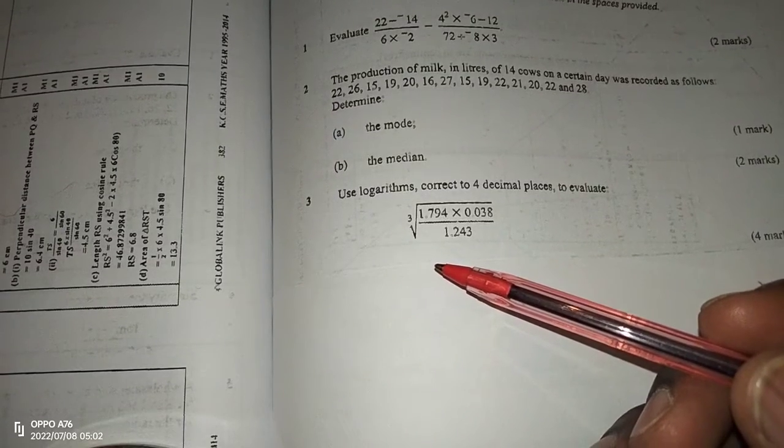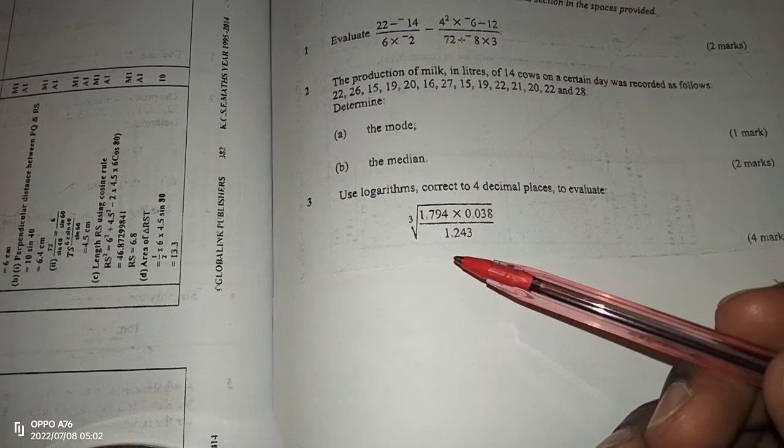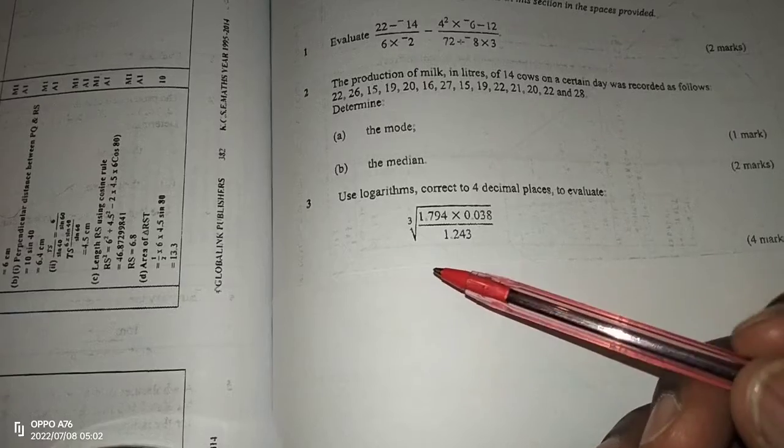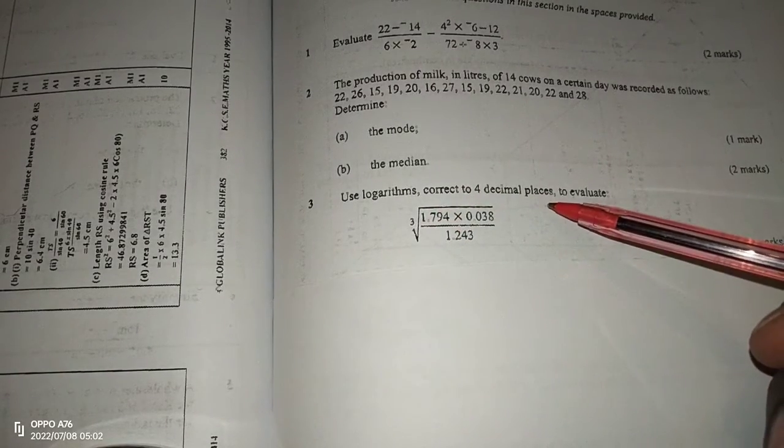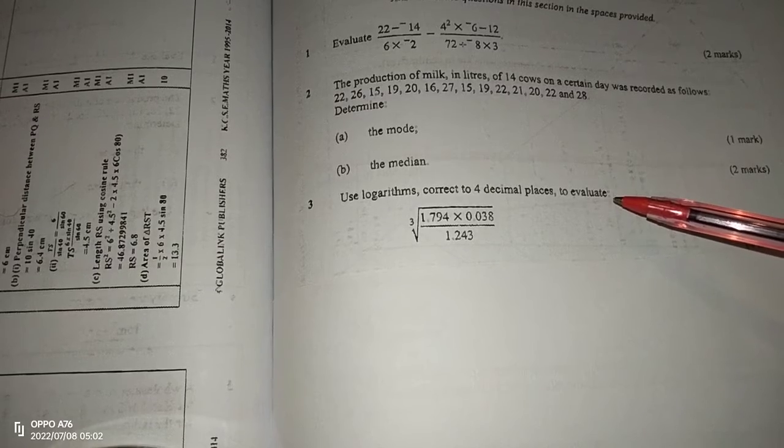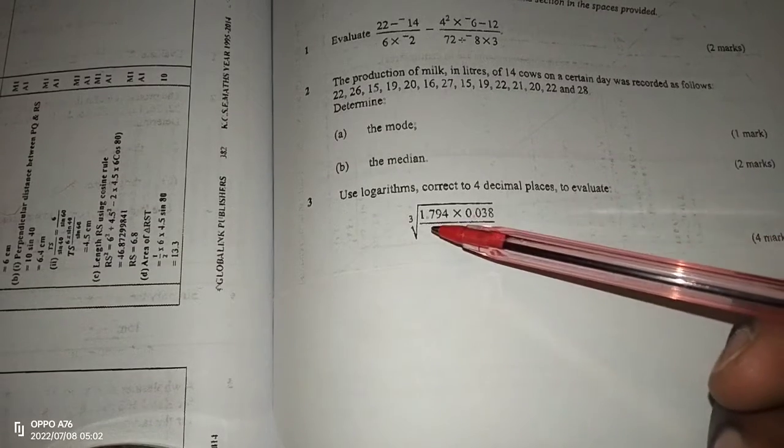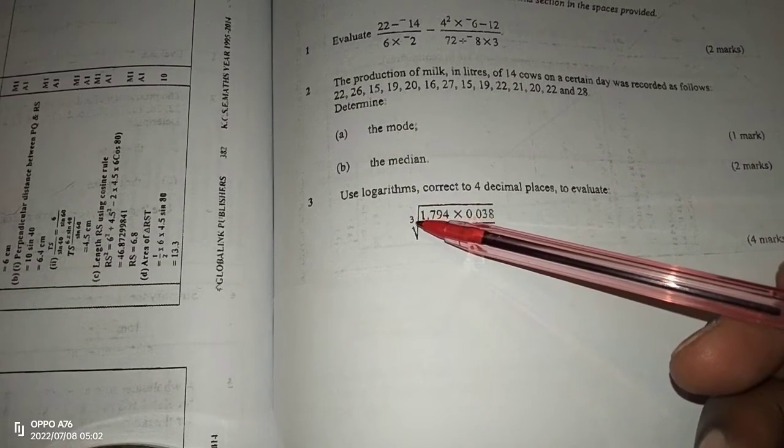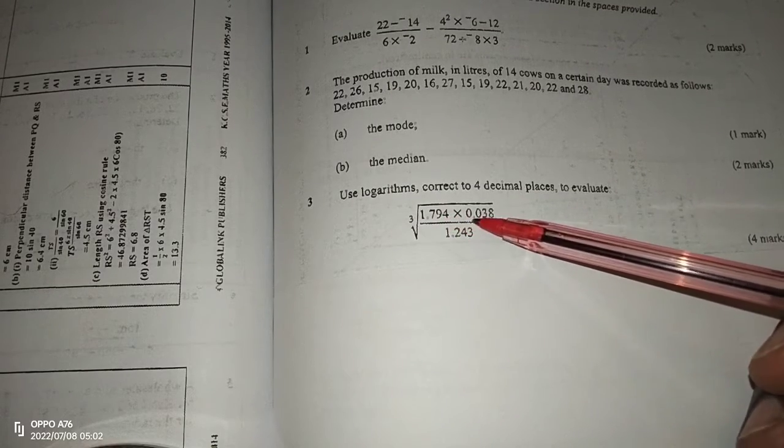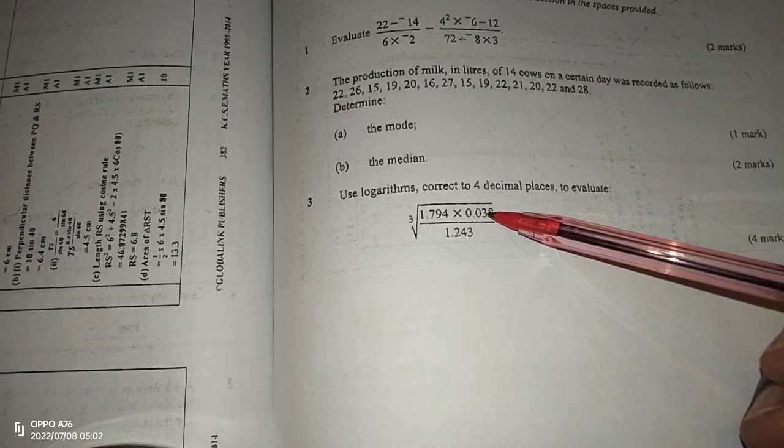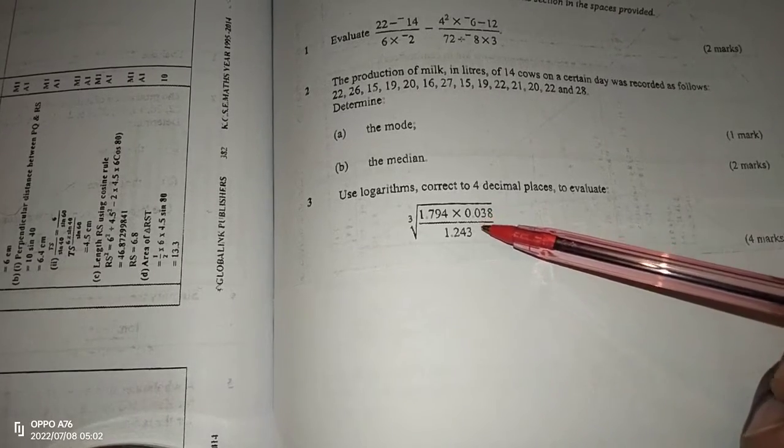Remember to subscribe to our channel and to also share this link with your friends. We are taught to use logarithms correct to 4 decimal places to evaluate the cube root of 1.794 times 0.038 divided by 1.243.